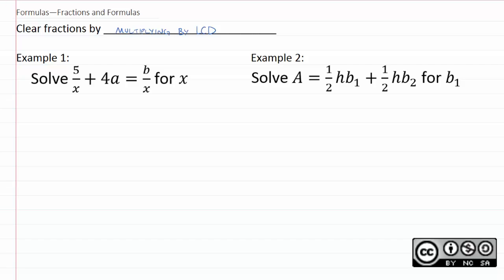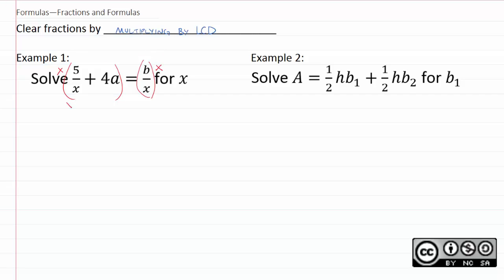So for example 1, if you notice our denominator is x, and they ask us to solve for x, which means somehow we need to get x on top. So we do that by clearing the fractions. Where before we would multiply by 2 or 3 or 6 or 12 or whatever, here we're going to multiply by a variable, x. But all the math is exactly the same — we're just going to multiply x all the way across.